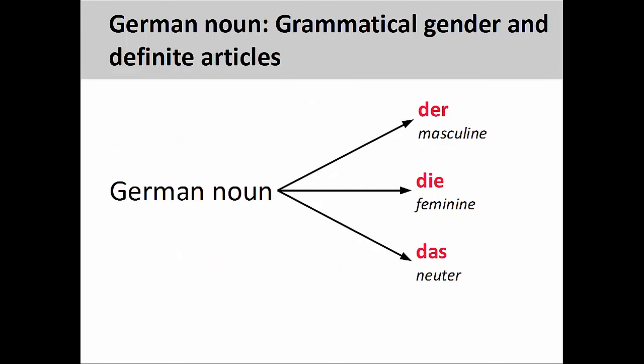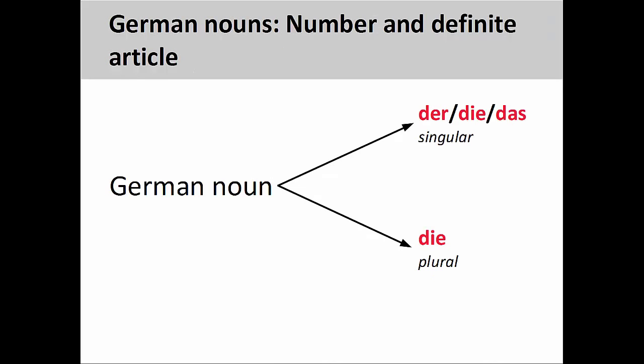You will recall from an earlier presentation that the grammatical gender of a noun is seen in its definite article. Der indicates a masculine noun, Die a feminine noun, and Das a neuter noun. Plural nouns manifest no gender — the only definite article for plural nouns is Die.